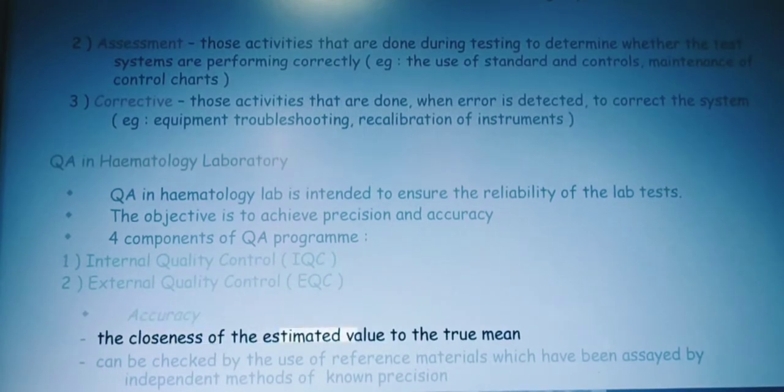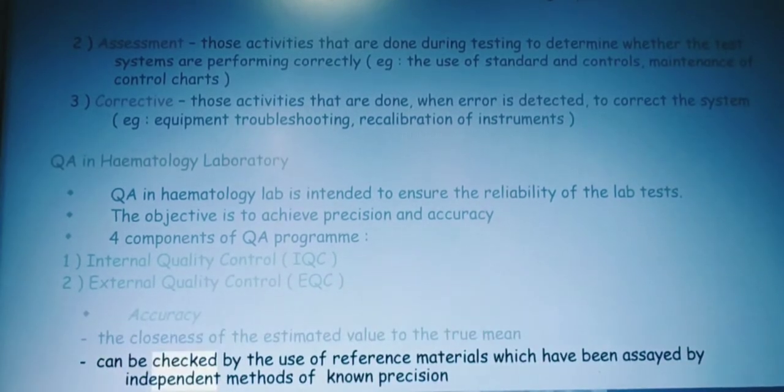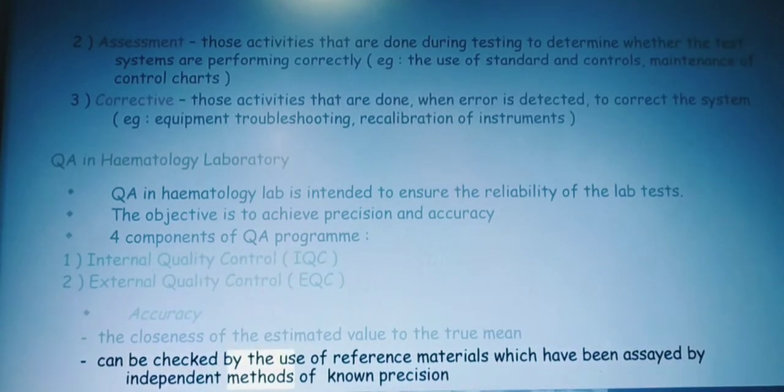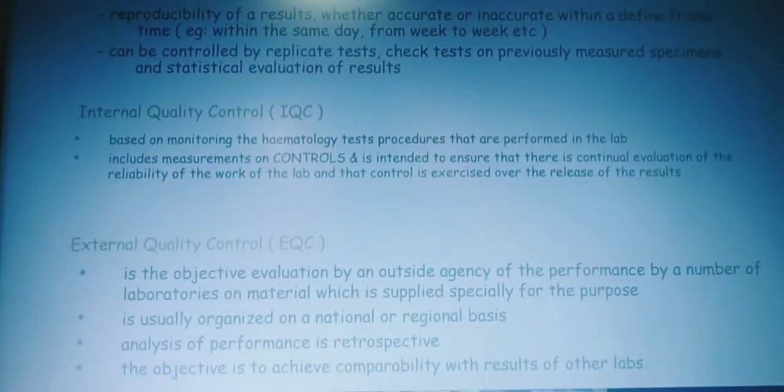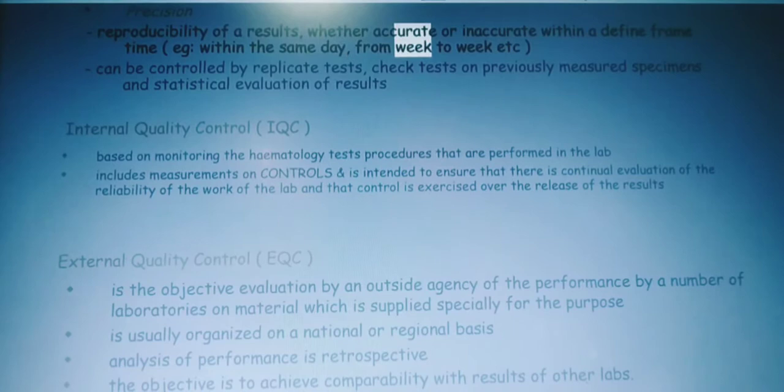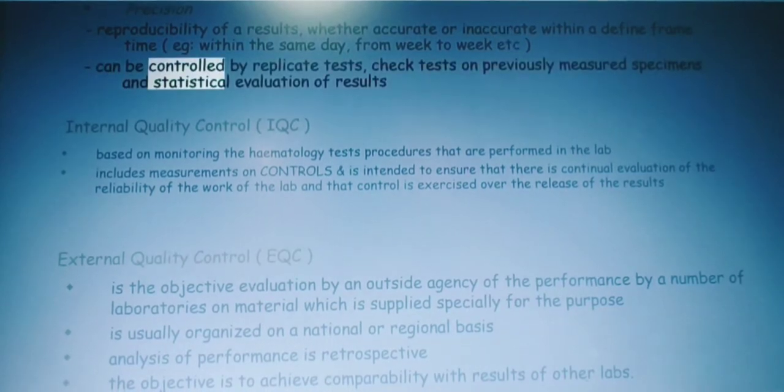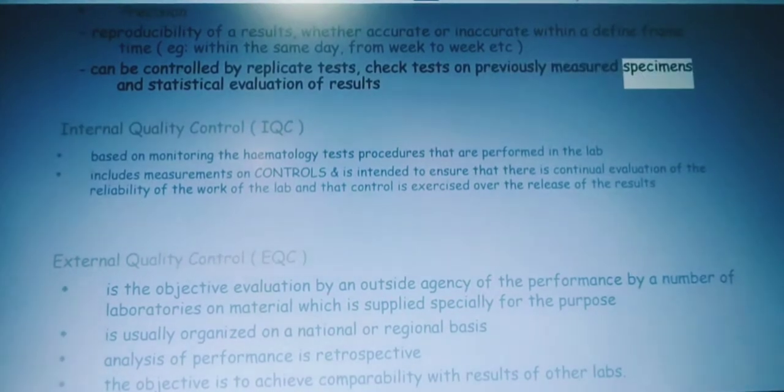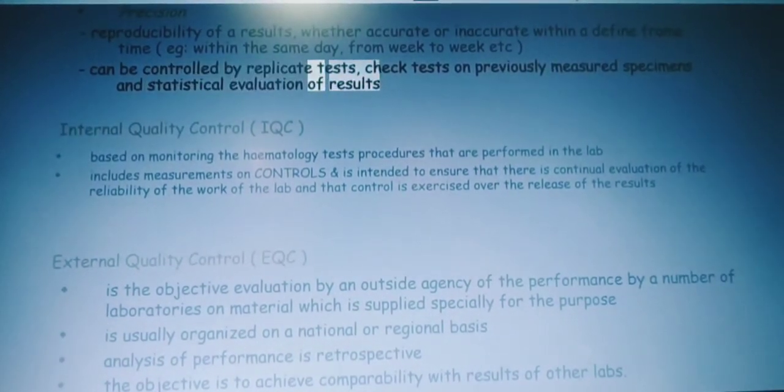Accuracy: the closeness of the estimated value to the true mean can be checked by the use of reference materials which have been assayed by independent methods of known precision. Precision: reproducibility of results, whether accurate or inaccurate within a defined time frame, e.g., within the same day, from week to week, can be controlled by replicate tests, check tests on previously measured specimens, and statistical evaluation of results.